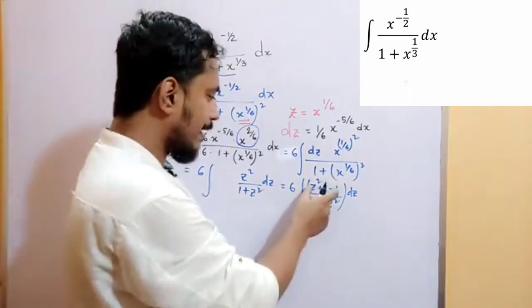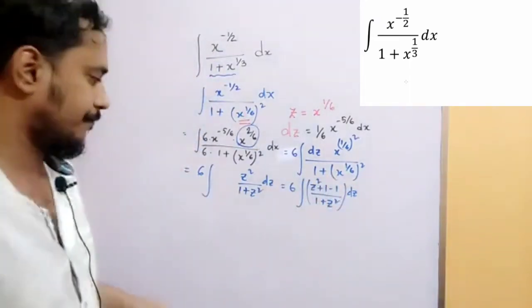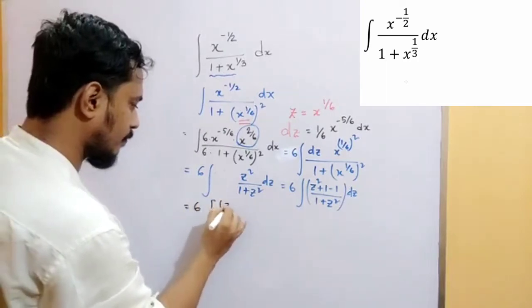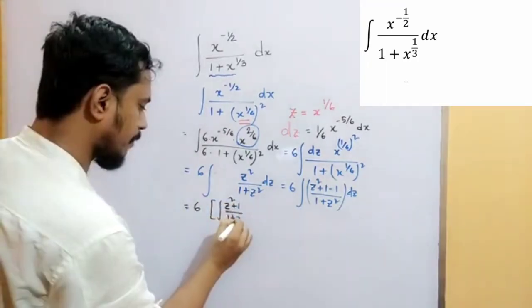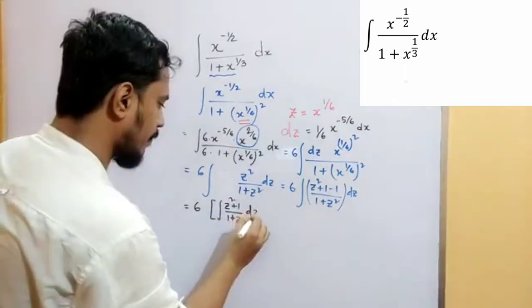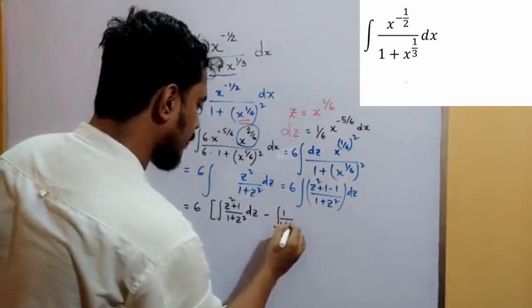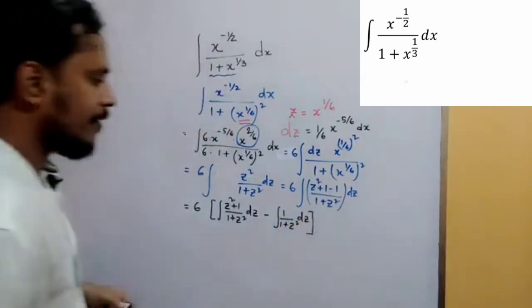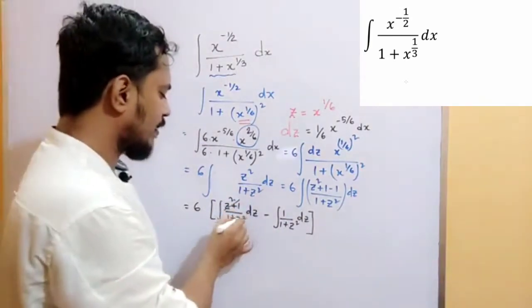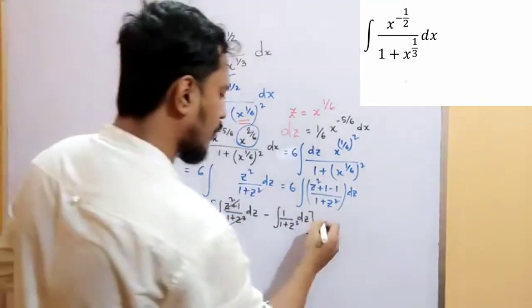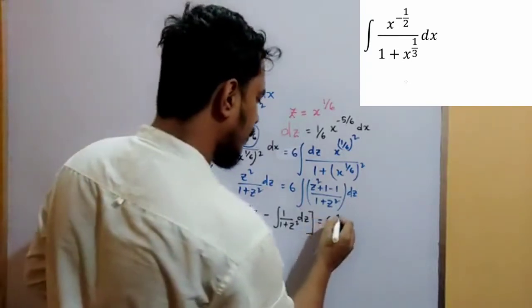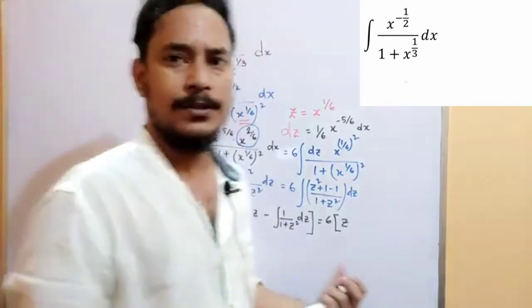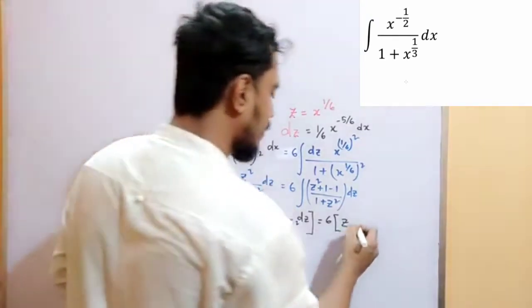now we can break that part into two fractions minus 1 by 1 plus z square dz. Now we can see those two cancel each other. So what will be the answer of the first integration z and what will be the integration of the second part tan inverse z.